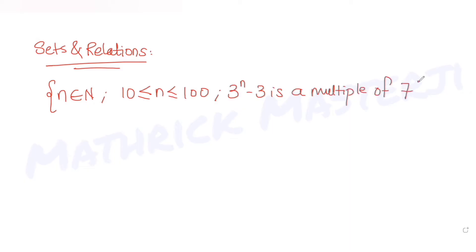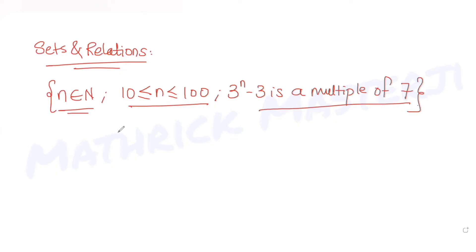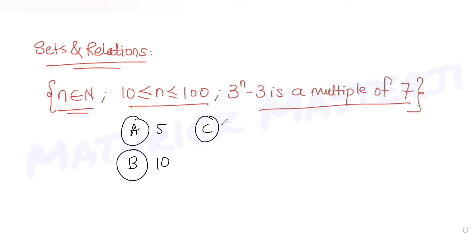So we need to find how many elements would be in the set that satisfies both conditions, and n belongs to natural numbers. The answer choices given are 5, 10, 15, and 20. We need to figure out which one is correct, so let's first analyze the divisibility condition.